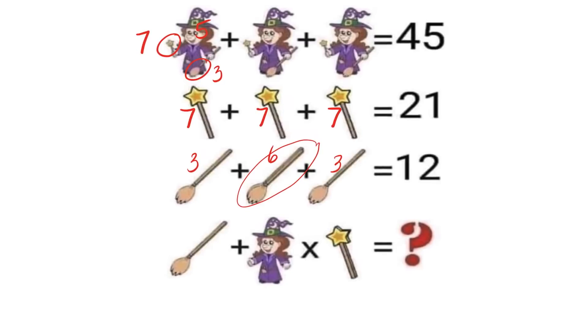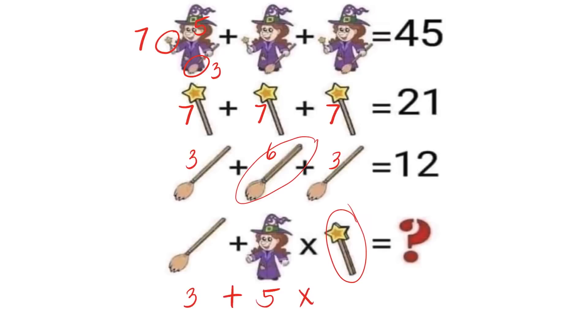So now we're ready for line 4. Each broom is worth 3, plus the value for the witch without a wand and without a broom is 5, times—also be careful on the third figure here because there's a double wand. Since there are two wands and each wand is worth 7, that means it's 14 total.